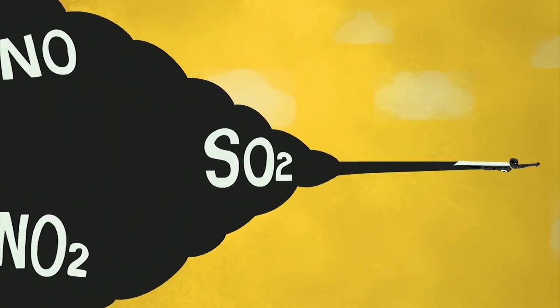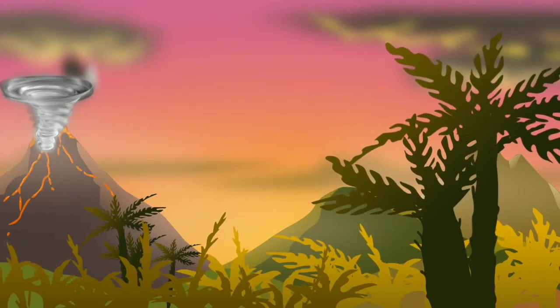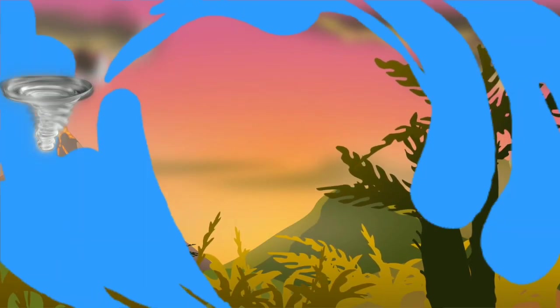Really a small portion of the sulfur dioxide and nitrogen oxide that causes acid rain is from natural sources, such as volcanoes. Most of it comes from the burning of fossil fuels.